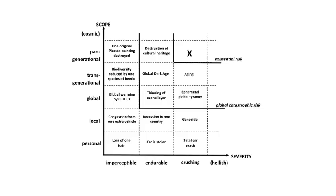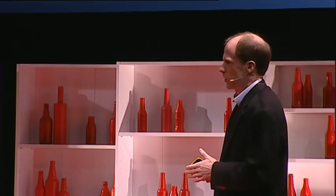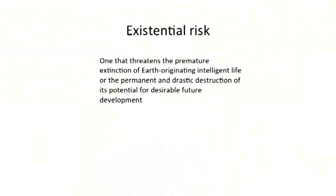Up in the upper right corner, we have the special category of existential risks. An existential risk is one that would have crushing severity — meaning death, or something in the ballpark of being as bad as death, something that radically destroys the potential for a good life, like severe permanent brain injury or lifetime imprisonment — and pan-generational in scope, affecting all generations to come. We can define an existential risk as one that threatens the premature extinction of Earth-originating intelligent life, or the permanent and drastic destruction of its potential for desirable future development.